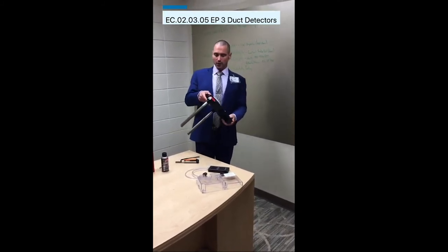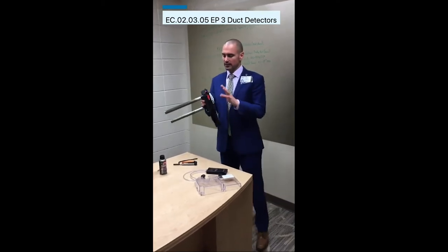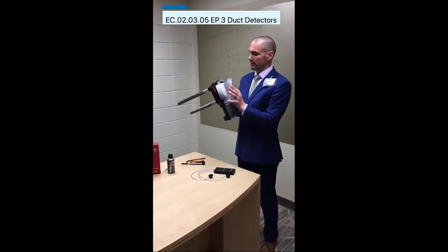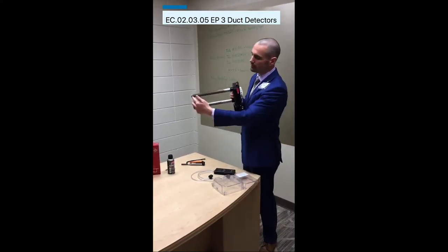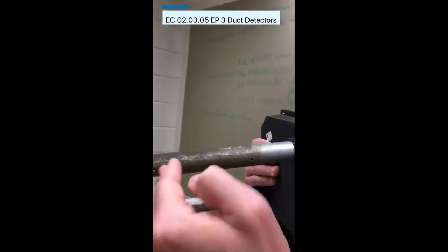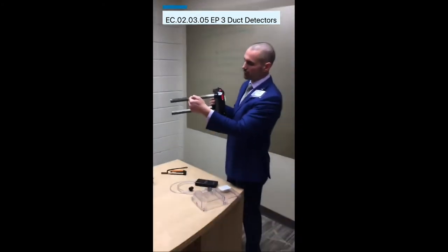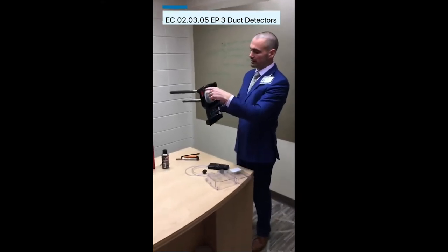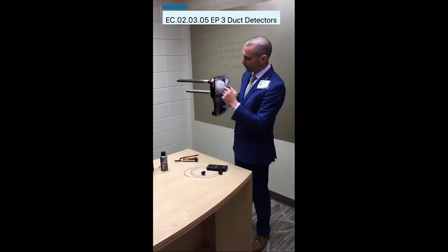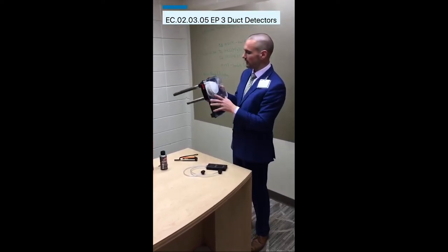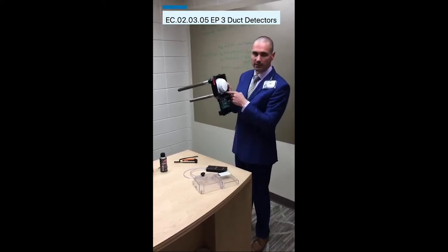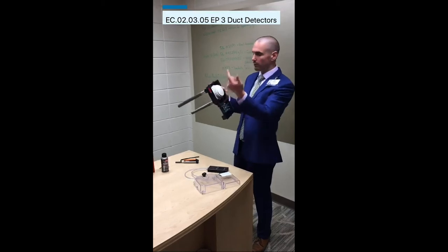Let's talk about how a duct detector functions. Inside the duct detector housing is a smoke detector. The supply tube has holes that face the direction of airflow — those holes force air into the chamber. There's a baffle that splits the smoke detector in half, forcing air into the smoke detector housing chamber and then out through the exhaust tube.